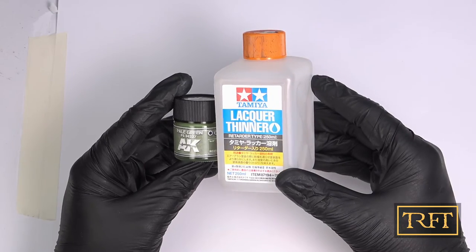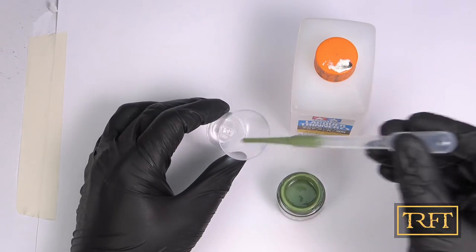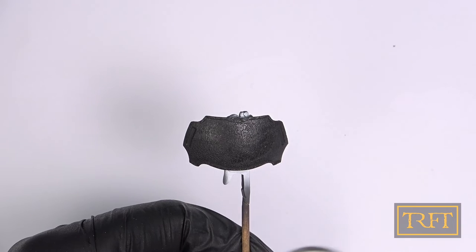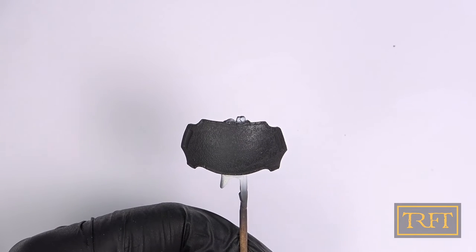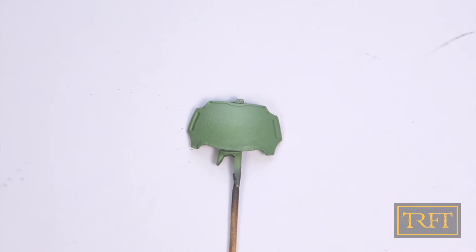So this is pale green from the AK Real Colors line, again with my favorite Tamiya thinner. Same dilution and same pressure as before. This true lacquer paint goes on even more easily than Tamiya XF paints. In this case, I did apply some highlights after reaching complete opacity, but that I finished off camera.